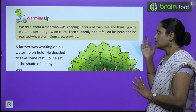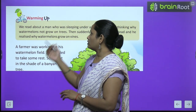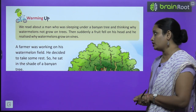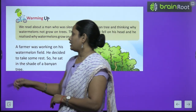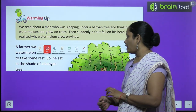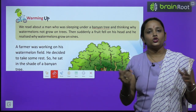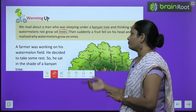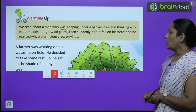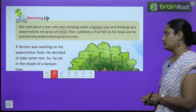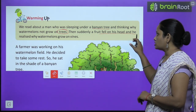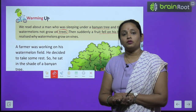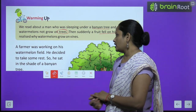That we are going to learn in this chapter. Let's start with the warming up. So we read about a man who was sleeping under a banyan tree and thinking why watermelons don't grow on trees. Let's start the story.